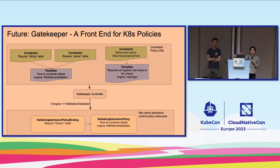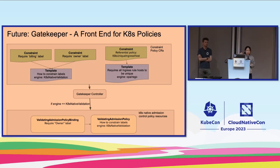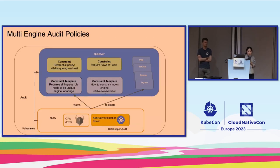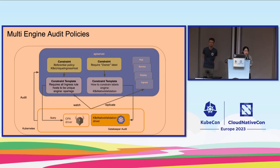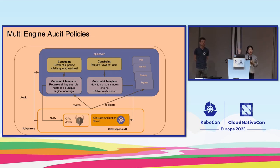When an admission request comes in it goes to the API server, which goes through all the admission controllers including all custom webhooks. It looks at Validating Admission Policy resources and bindings — an example would be a 'require owners label' constraint. Similarly, the admission webhook like Gatekeeper sends the query to OPA, which looks at all the constraints and constraint templates in the cluster and returns the decision back to the API server — an example being unique ingress hostname.